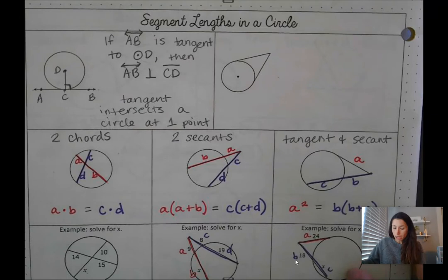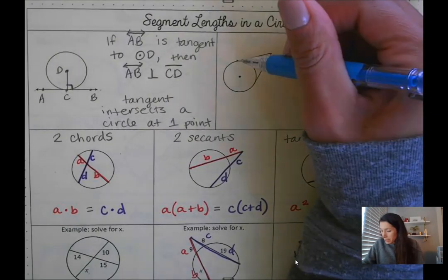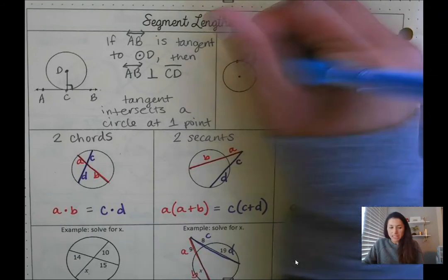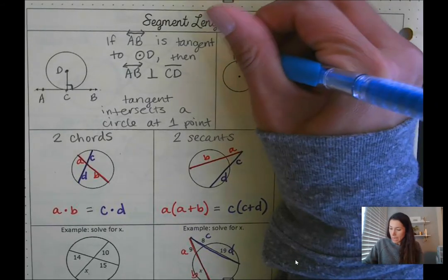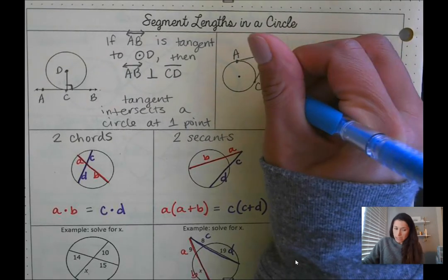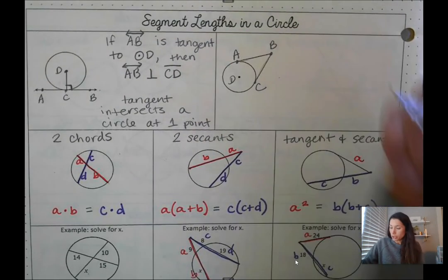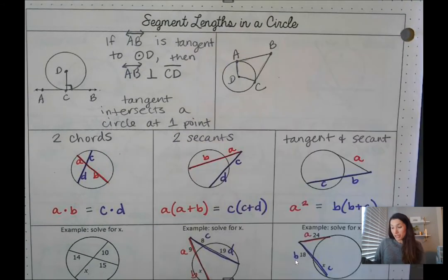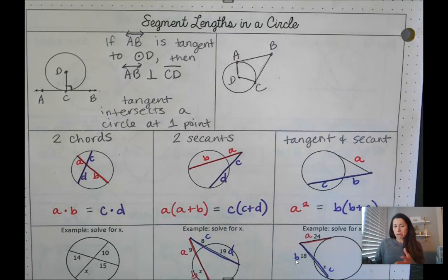In my next diagram here, let's say both of these segments are tangent. Let's call this point A, this point B, this C, and then the center of the circle D. Let's draw a radius. So we have two radii there.